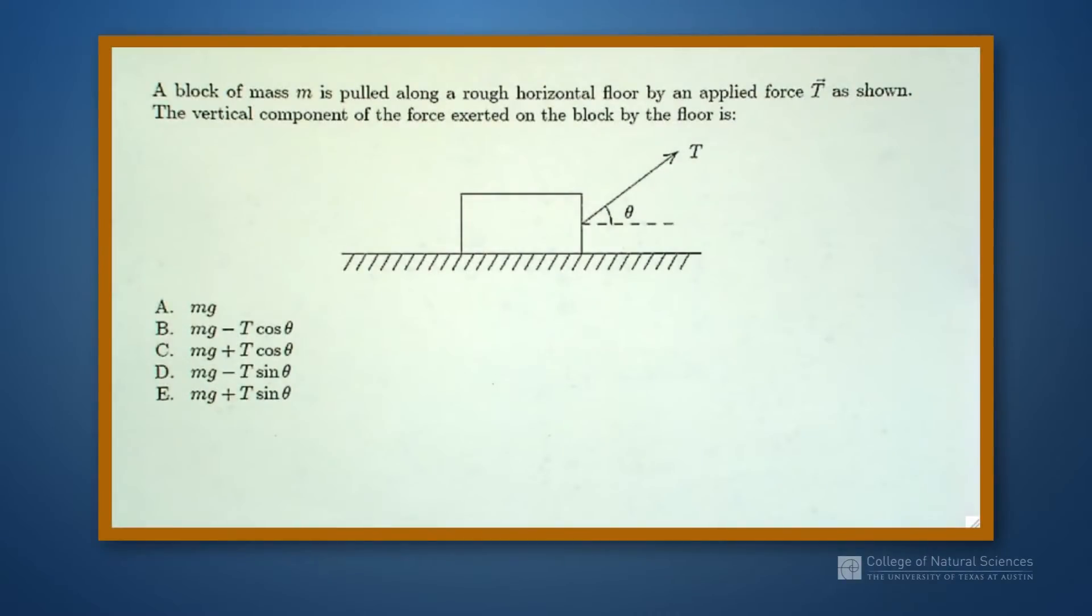So this question says that a block of mass M is being pulled along a rough horizontal floor with an applied force T as shown. The vertical component of the force exerted on the block by the floor is what?